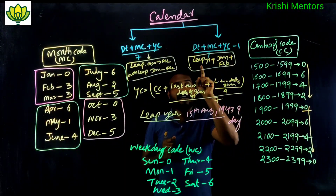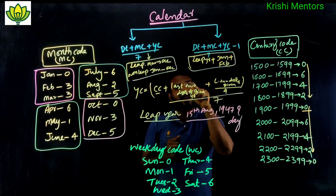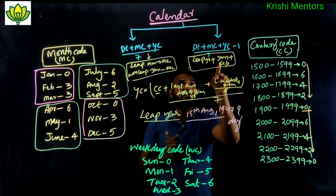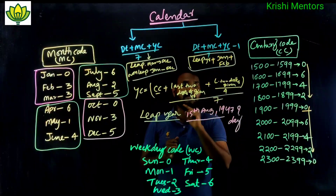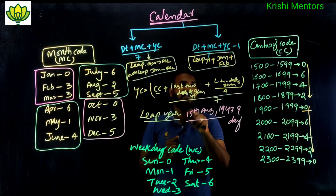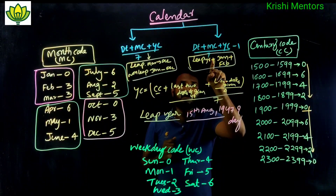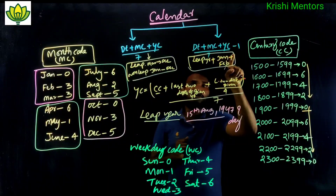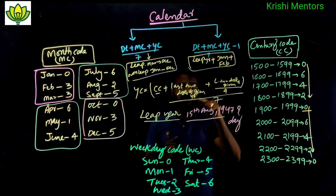If it is a leap year and the month is January, then use: Date plus month code plus year code divided by 7, minus 1.